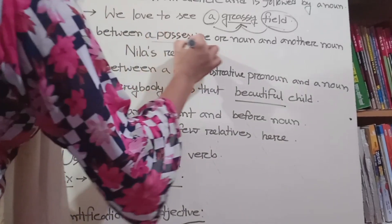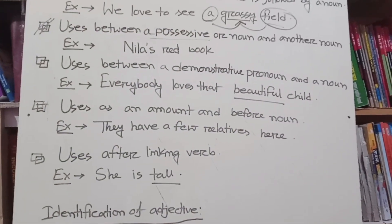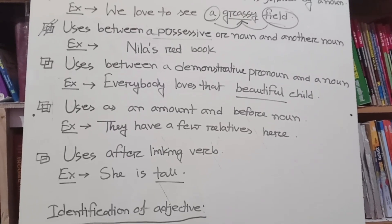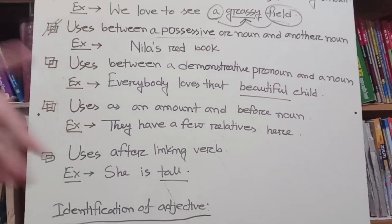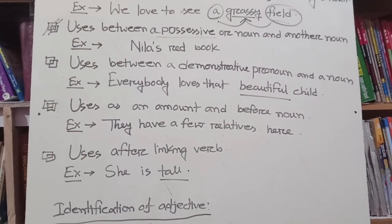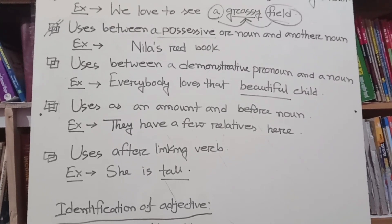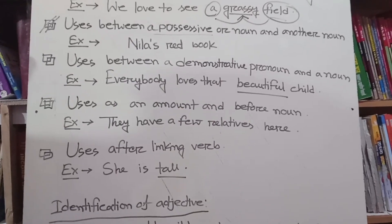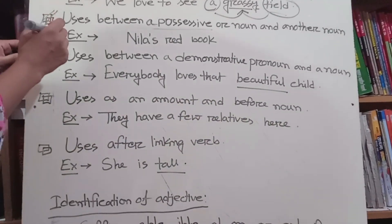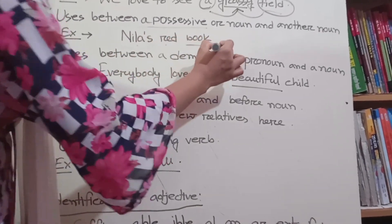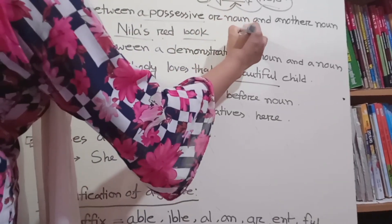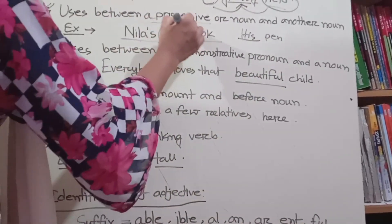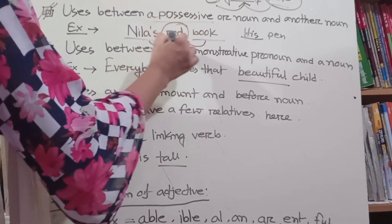The next function is that adjectives are used between a possessive or noun and another noun. Possessive actually means ownership — it belongs to you, your ownership. So adjectives naturally come in the middle of a possessive and a noun. For example: 'Nila's red book' — 'book' is the noun, 'Nila's' is the possessive, and 'red' is the adjective placed between the possessive and the noun.